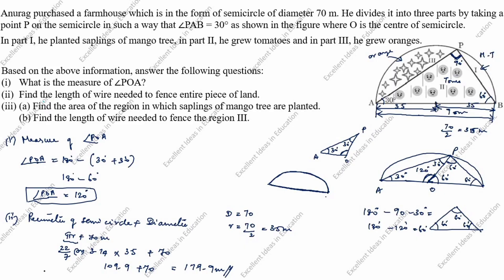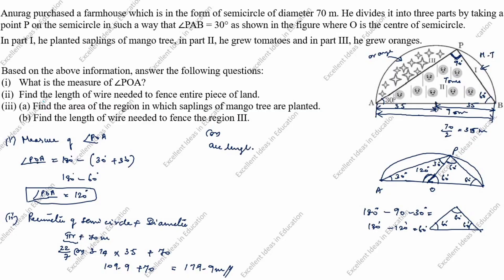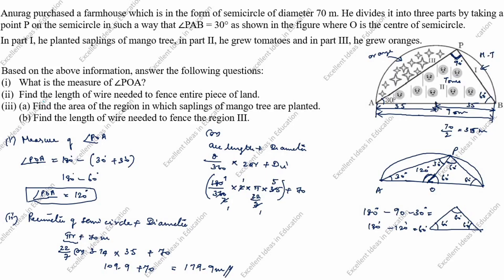Alternatively, using arc length plus diameter: arc length equals (θ/360) × 2πr plus diameter. Theta is 180 degrees (since 120 plus 60 equals 180). So: (180/360) × 2 × (22/7) × 35 plus 70 equals (1/2) × 2 × (22/7) × 35 plus 70 equals 22 × 5 plus 70 equals 110 plus 70 equals 180 meters. The required length of wire to fence is 180 meters.